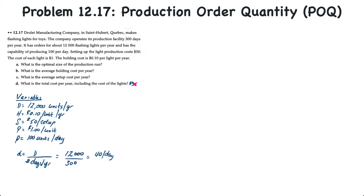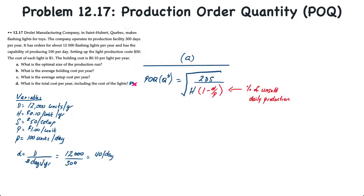Now we can proceed with requirement A, which is to determine the optimal size of the production run, also known as the production order quantity or POQ — call it Q*. The formula is the square root of 2 times annual demand times setup cost, divided by the holding cost times (1 minus daily demand divided by daily production). You might notice this looks similar to the EOQ formula, which was the square root of 2DS over H. The difference is that (1 minus d over p) term.